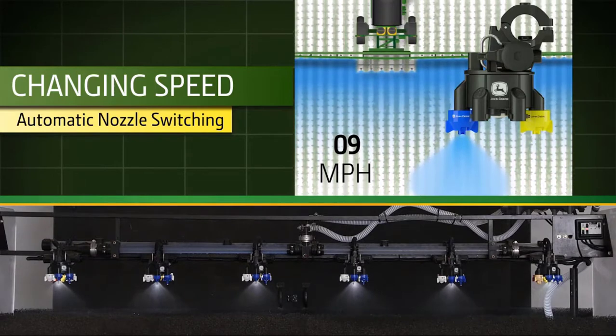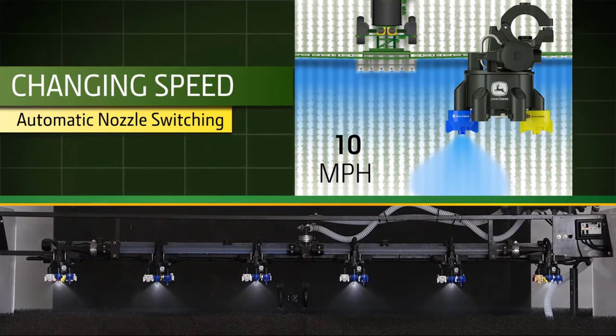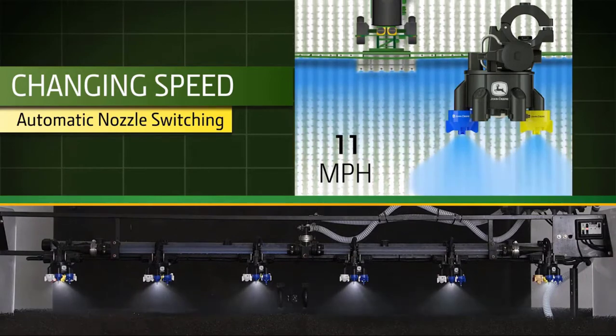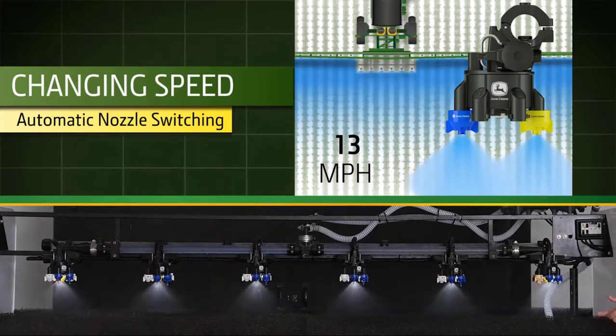You'll notice that we changed from A to B at around that 8 mile an hour mark. We're going to then change to A plus B to maintain that target rate.